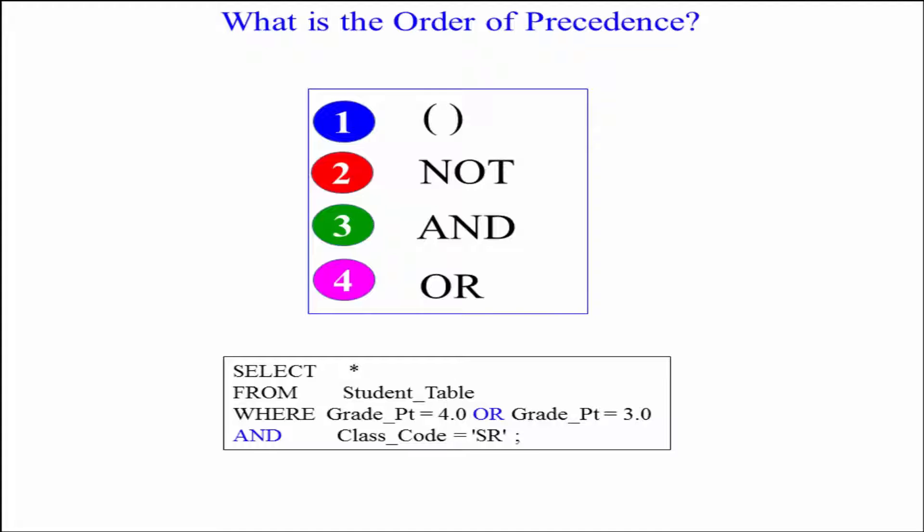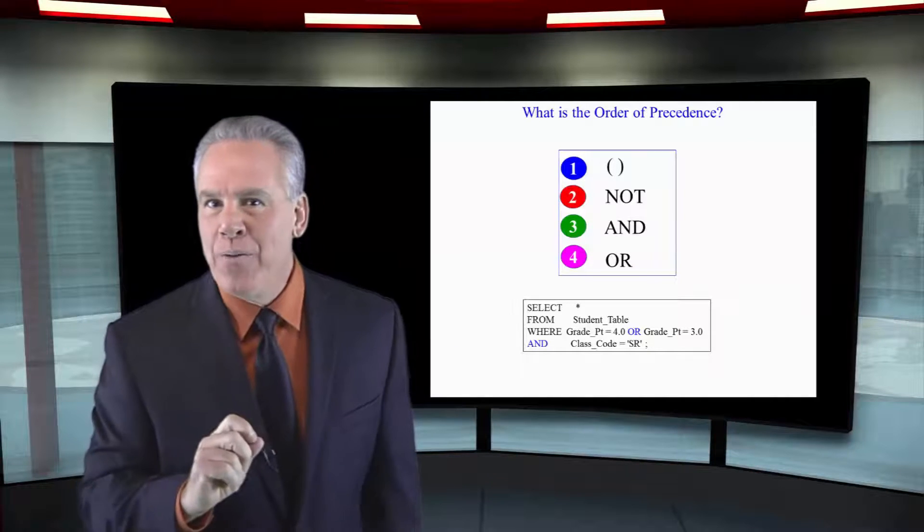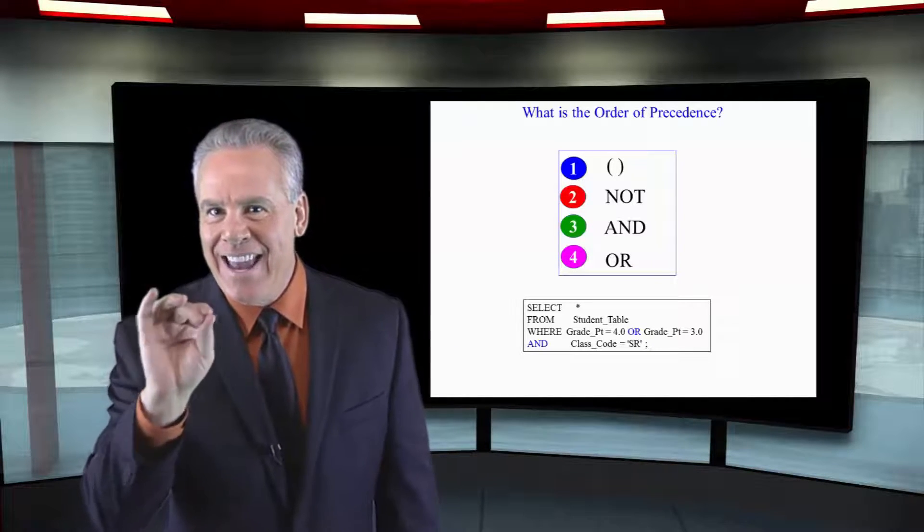Select everything where the grade point equals 4.0 or the grade point equals 3.0 and class code equals senior. What the system did is it said, well, there was no parens. There was no NOT statement. So I will analyze AND next.